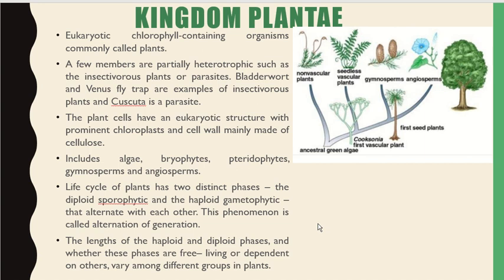Kingdom Plantae comprises eukaryotic, chlorophyll-containing organisms commonly called plants. A few members are heterotrophic, for example bladderwort and Venus flytrap are insectivorous plants, and Cuscuta is a parasite. Plant cells have a eukaryotic structure with prominent chloroplasts and a cell wall made up of cellulose. This kingdom includes algae, Bryophyta, Pterophytes, gymnosperms, and angiosperms.